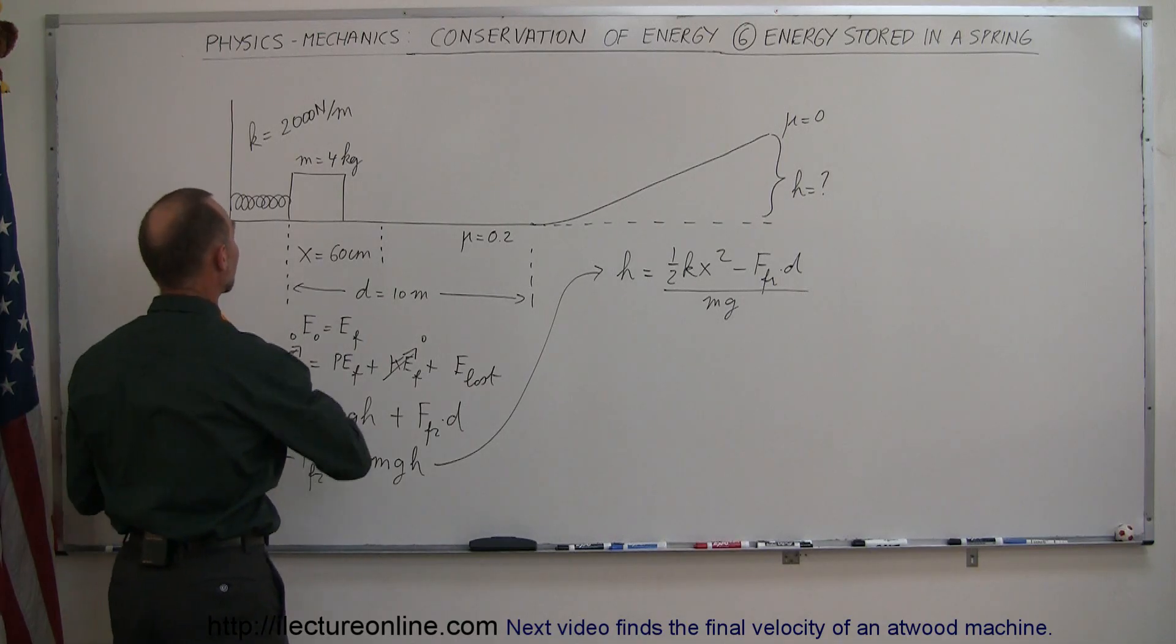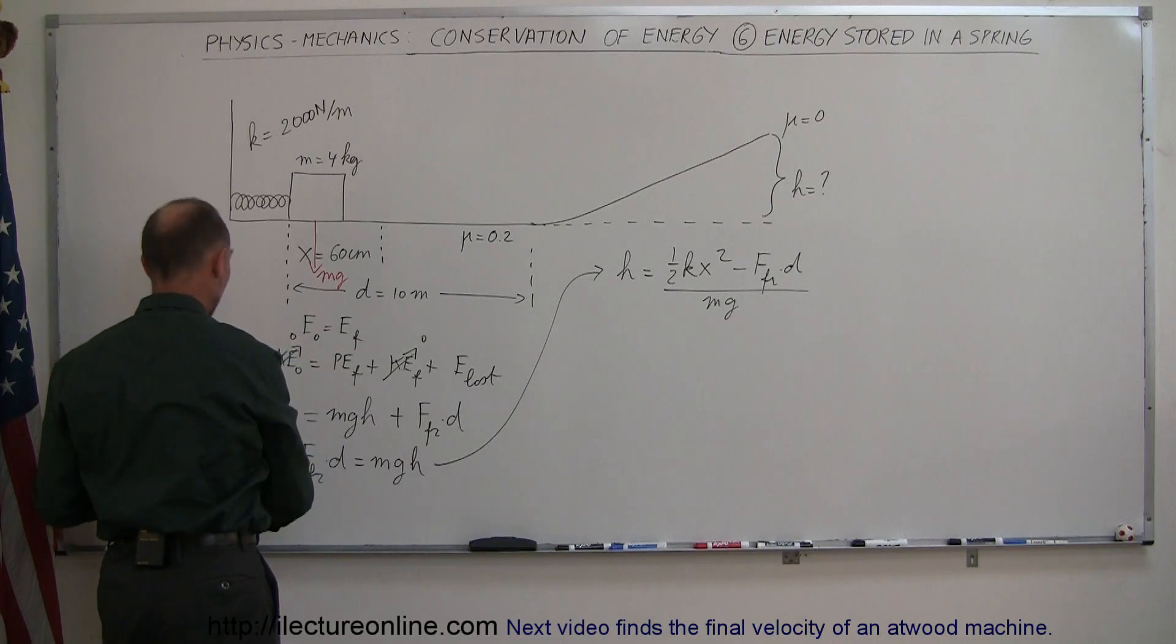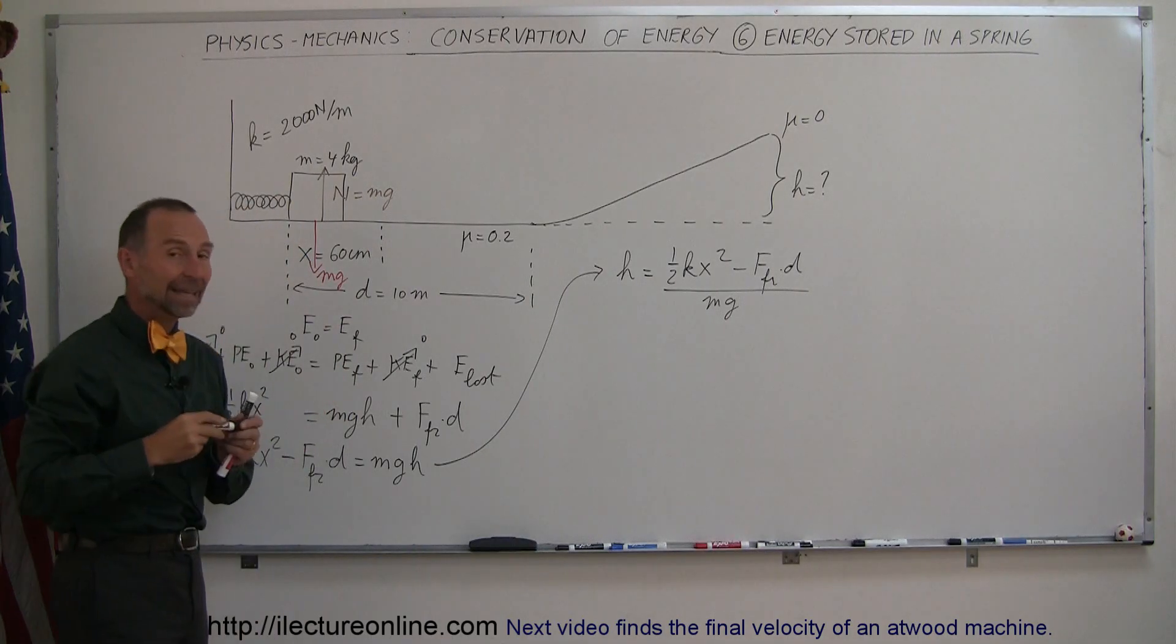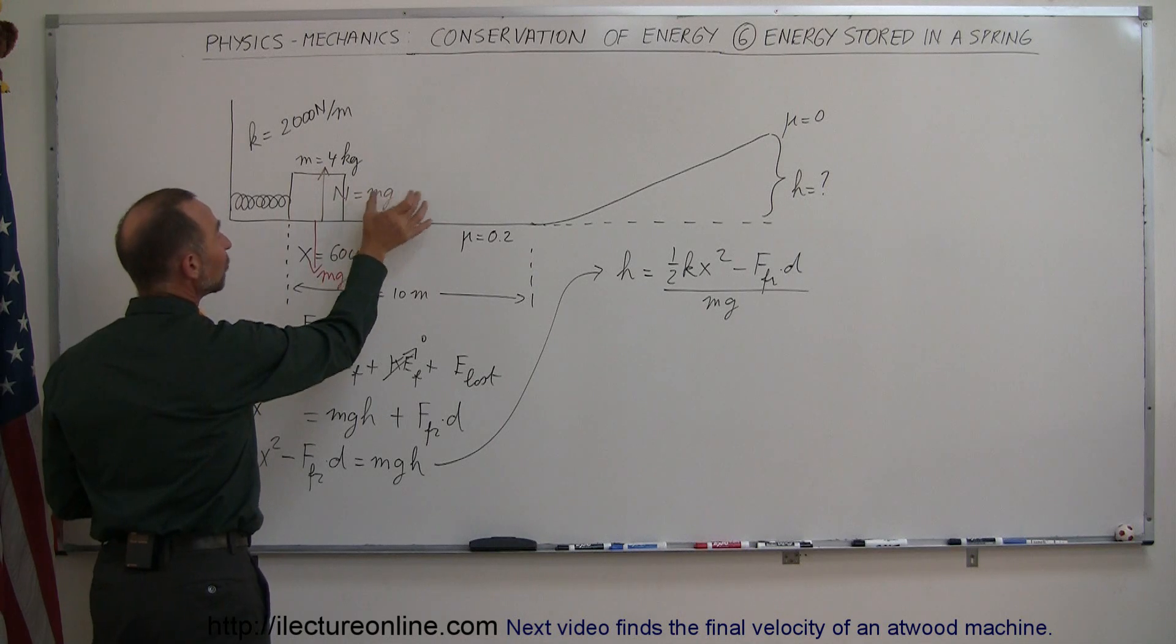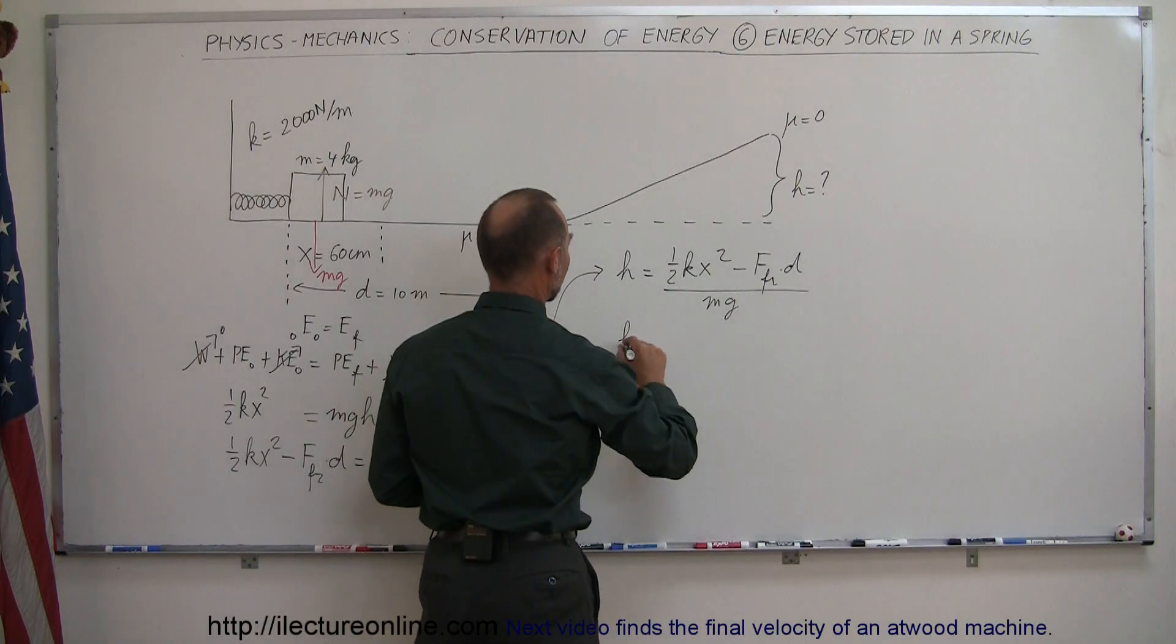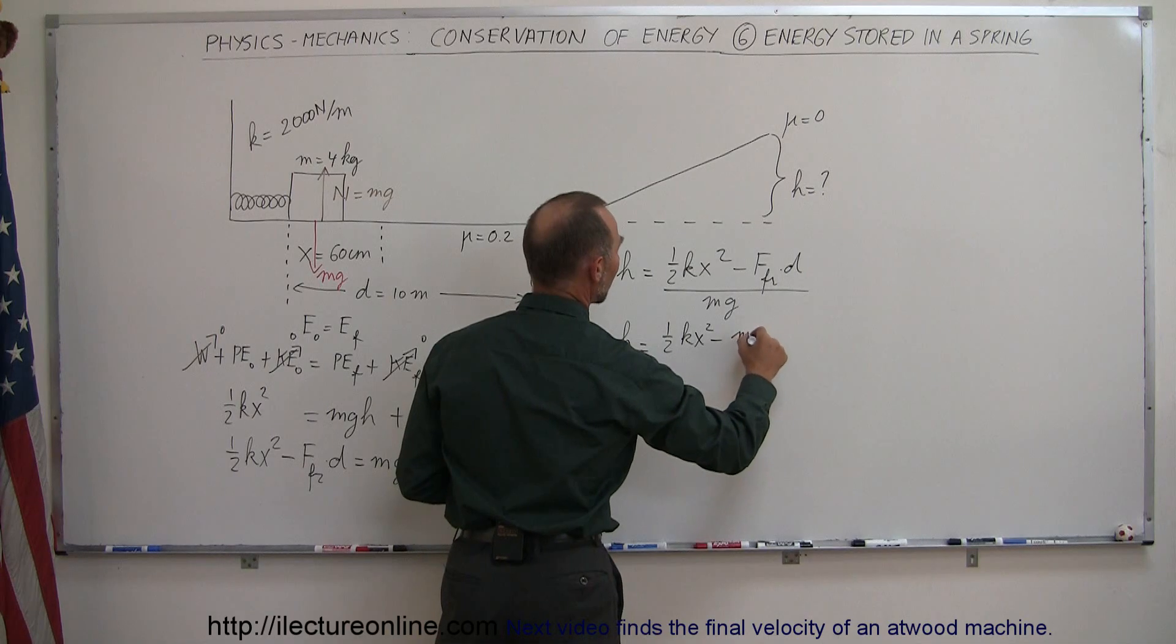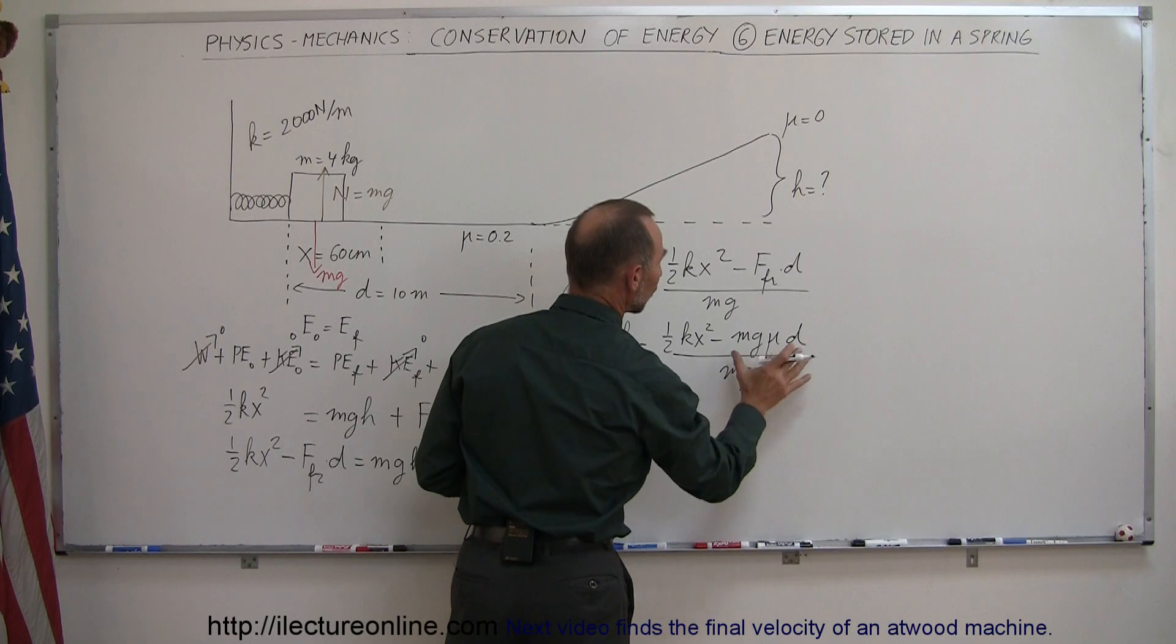which is equal to the weight of the object times mu. Remember that we have the weight of the object because of gravity. We have the normal force, which is equal to that weight in magnitude because it's on a flat surface. So n is equal to mg, just in the opposite direction. And then of course for the friction force, we take n times mu or mg mu. So when we plug that in here, we get the height gained is equal to one-half kx squared minus the normal force,